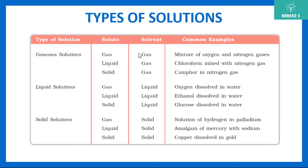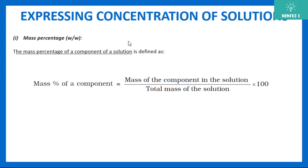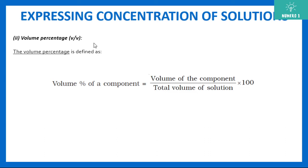Now, how to measure the concentration of a solution — we can express it in various units. The first unit is mass percentage: mass of the component in the solution divided by total mass of the solution, multiplied by 100. Similarly, volume percentage is volume of the component divided by total volume of the solution, multiplied by 100.